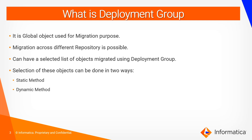A Deployment Group is a global object which is used for migration purposes. It is essentially a list, or group, of PowerCenter objects which have to be migrated from one repository to another repository. It can have objects from one folder or from various folders. The selection of these objects can be done in two different ways: the static method or the dynamic method.